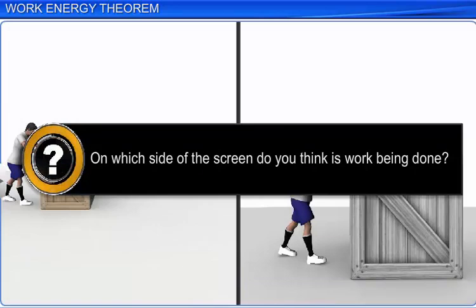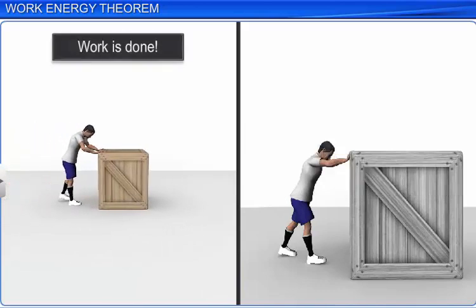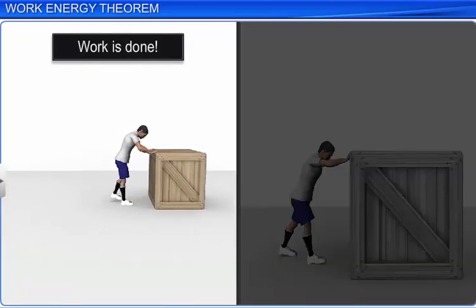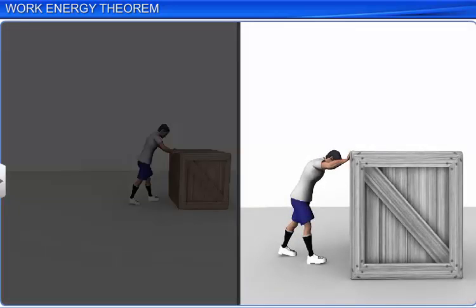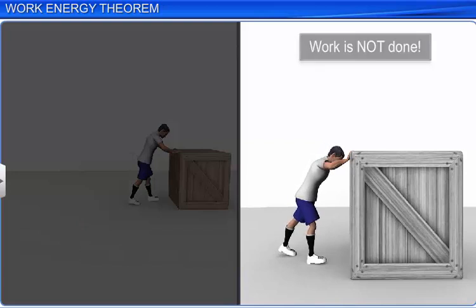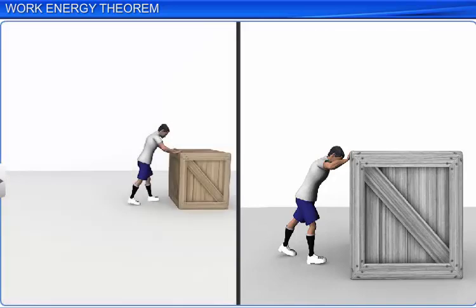On which side of the screen do you think is work being done? Work is being done only on the left side of the screen, where we see that a block is being pushed across the floor. Even though in the second case the wooden crate is being pushed, there is no work being done. This is because, in physics, work is said to be done only when an applied force succeeds in moving a body.